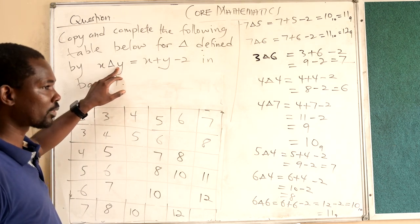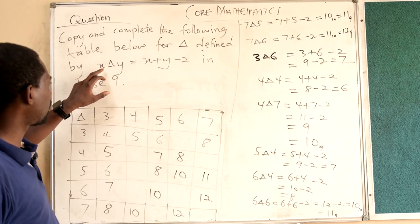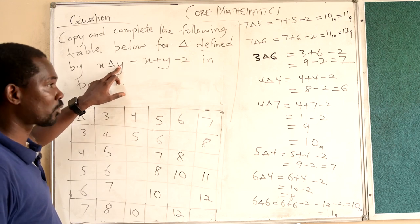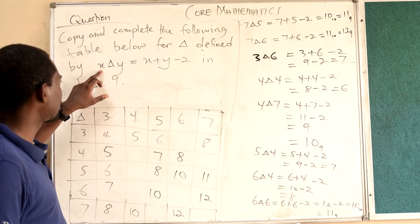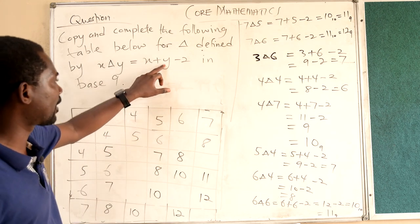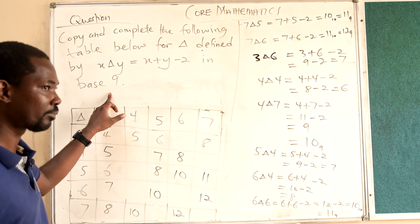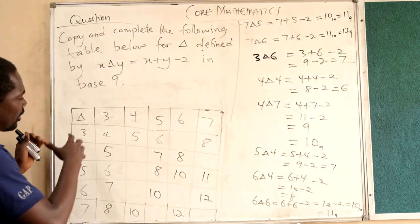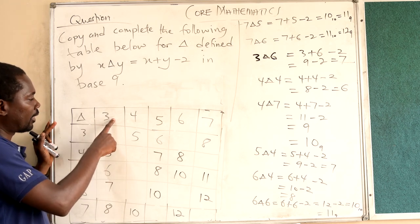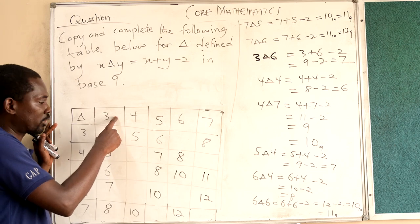We have two numbers x and y. x operated on y — the first number is x, the second number is y. So the first number operated on the second number equals the first number plus the second number minus 2. For example, 3 triangle 3 is 3 plus 3, which is 6, minus 2, which is 4.